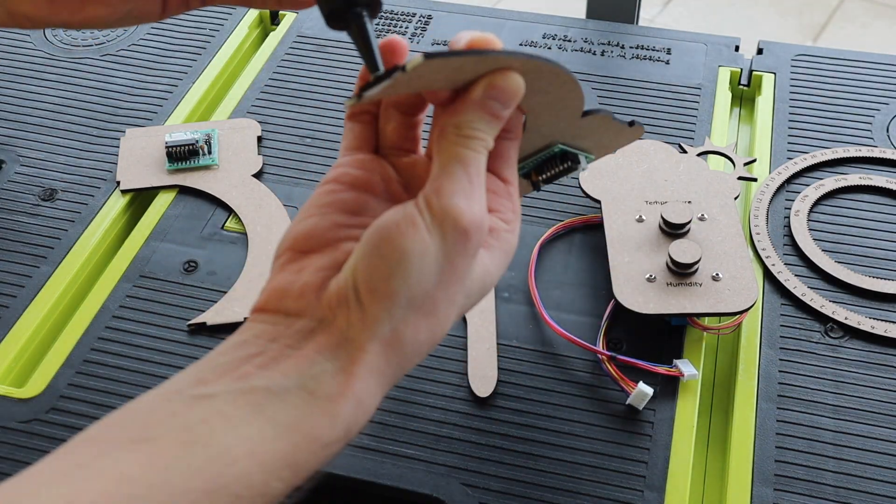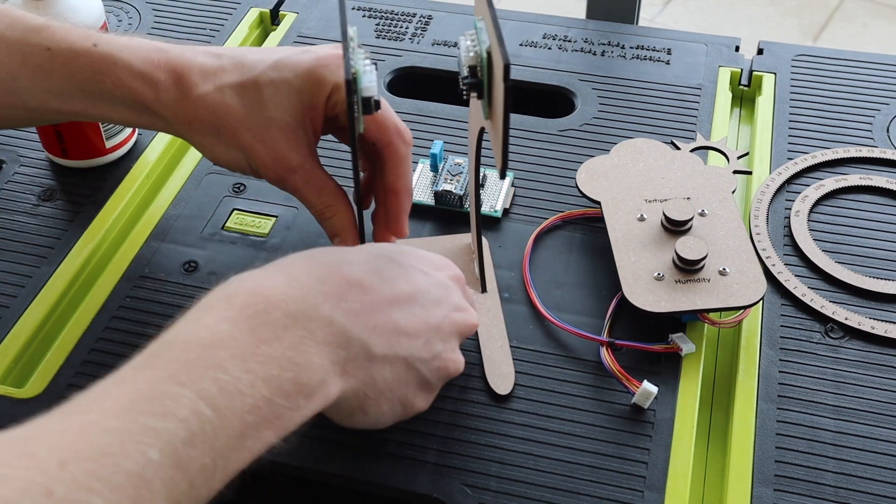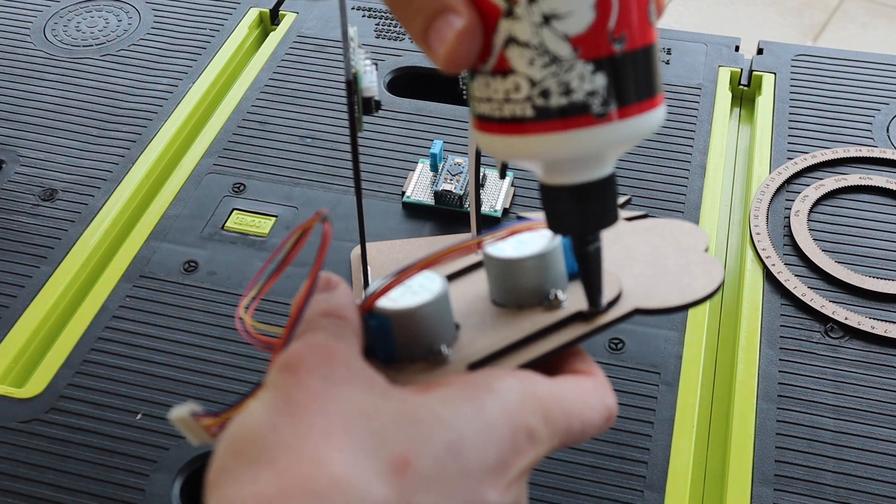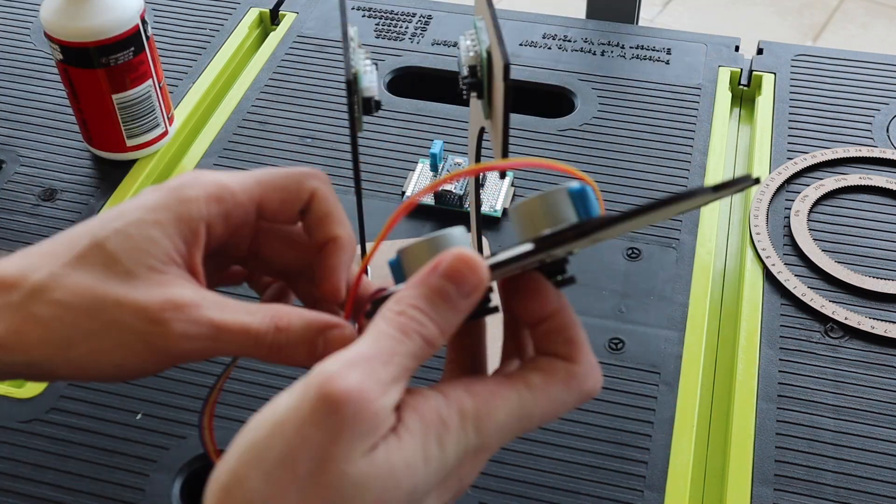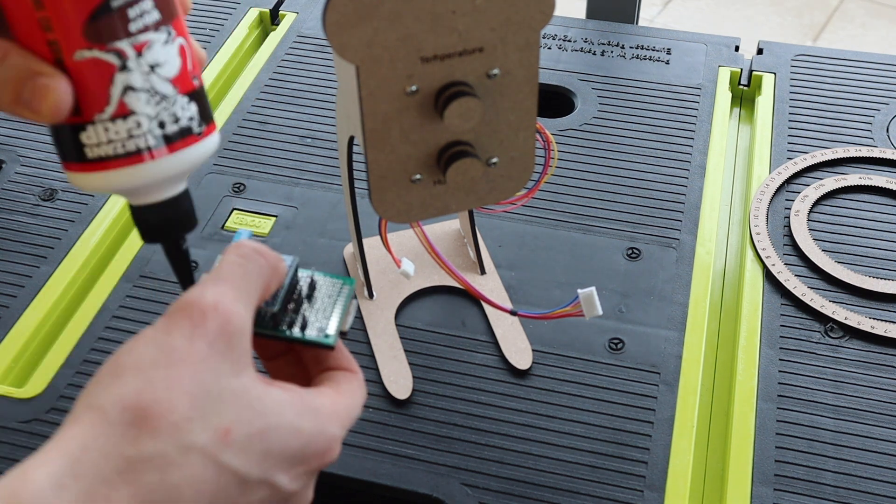Now that the electronics are glued into place, we can assemble the rest of the weather station using wood glue. Glue the two legs onto the base and then add the front plate to the legs. Finally, glue the back plate into place and allow the glue to dry.